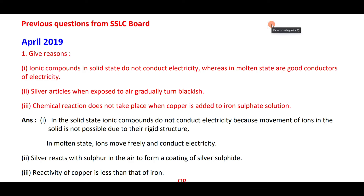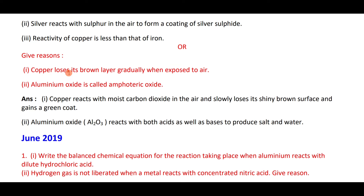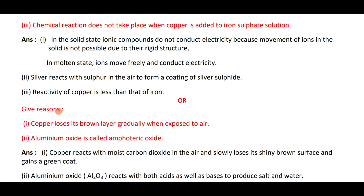Silver articles exposed to air gradually turn blackish because silver reacts with sulfur in the air to form a coating of silver sulfide. No chemical reaction takes place when copper is added to iron sulfate solution because copper is less reactive than iron. Copper loses its shiny brown surface when exposed to air — it reacts with moist carbon dioxide and becomes a green coat.